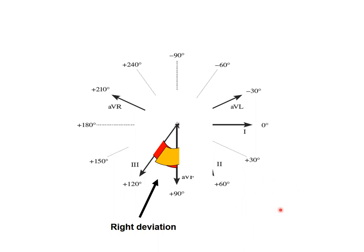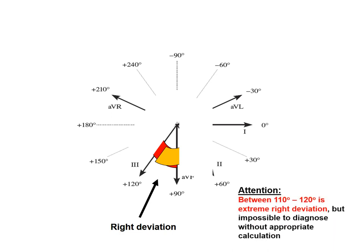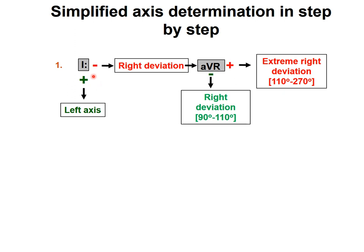Please make a note that the extreme right deviation starts at 110. However, it's very difficult or impossible to diagnose with that precise a calculation. So: lead number 1 negative with AVR positivity means extreme right deviation; lead number 1 negative with AVR negativity means only right deviation.